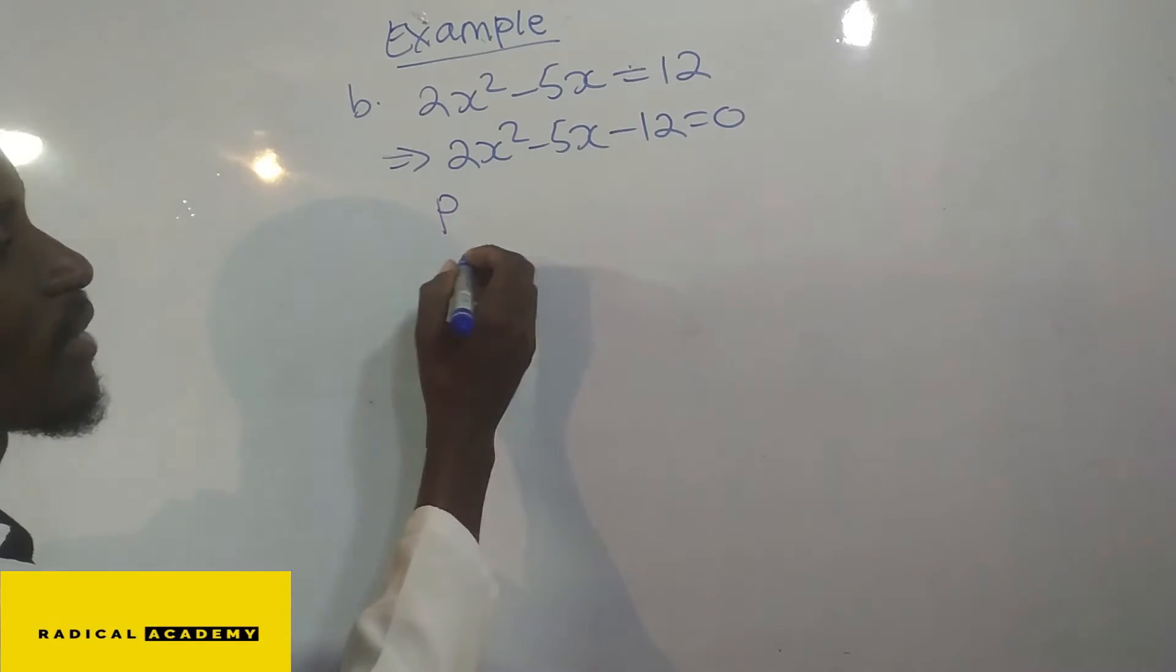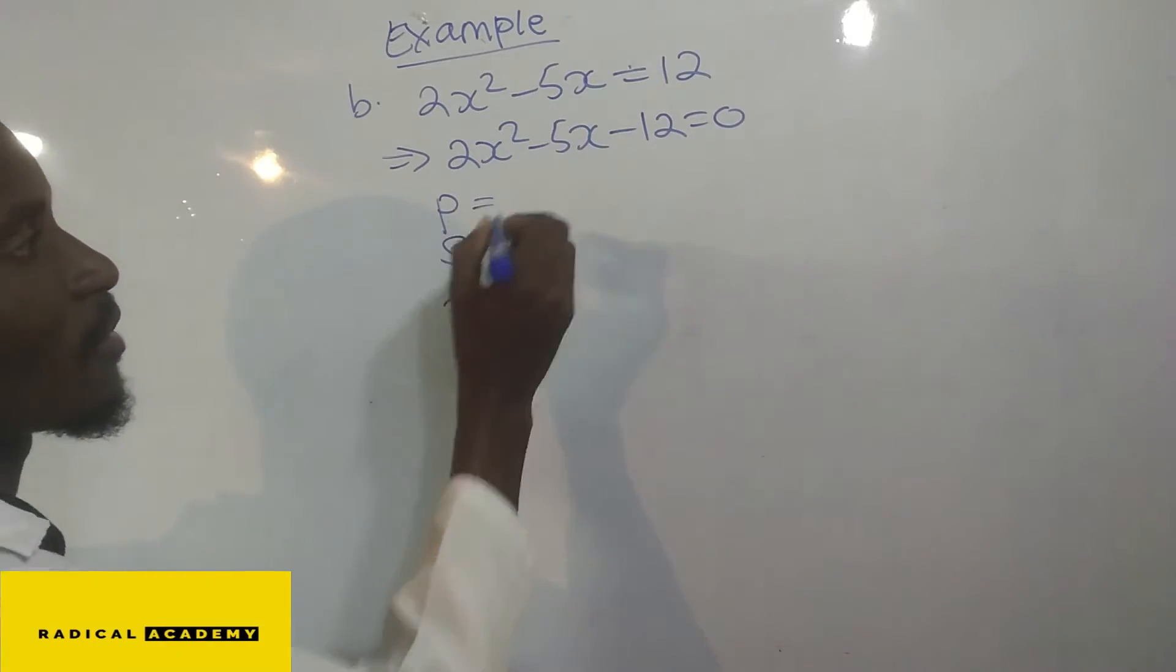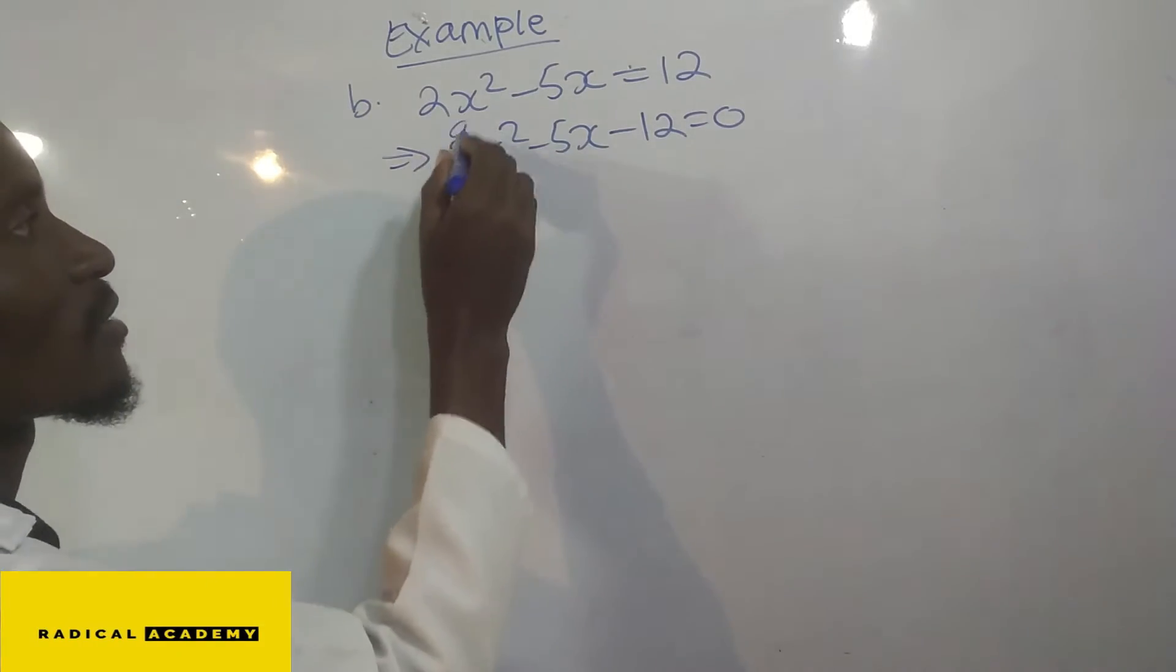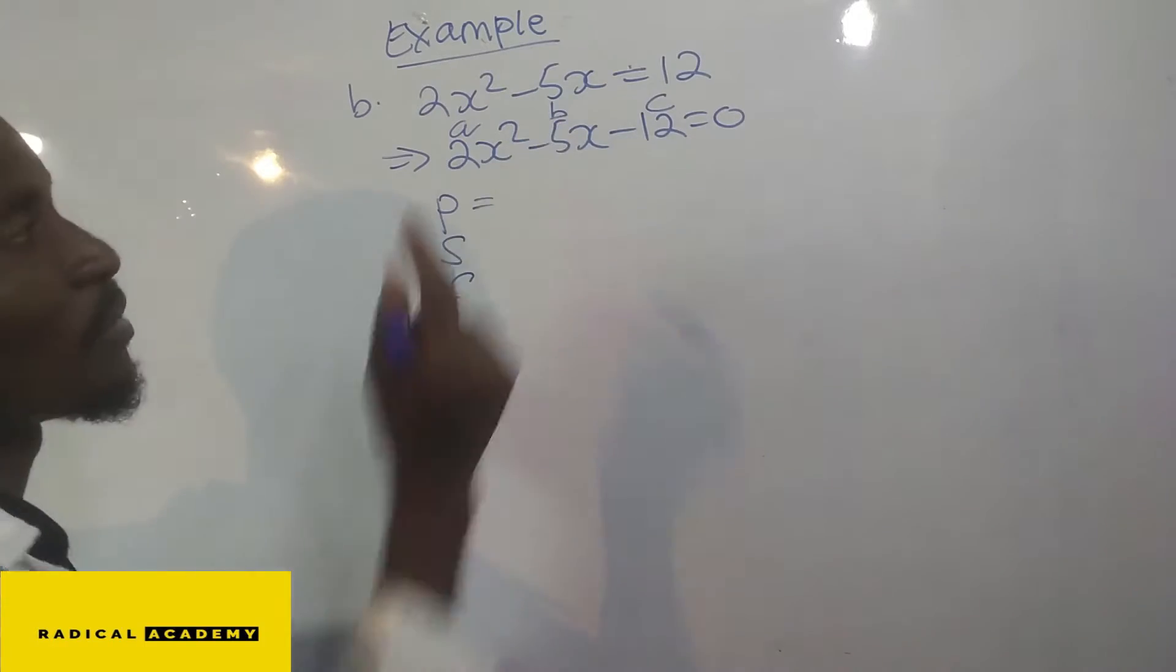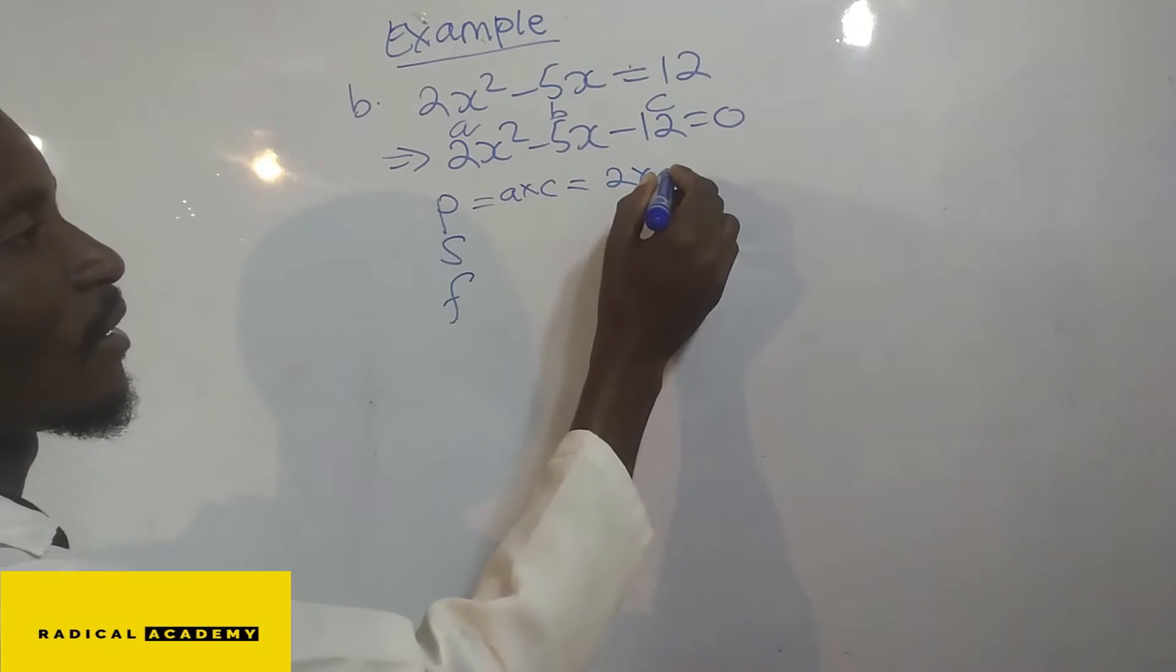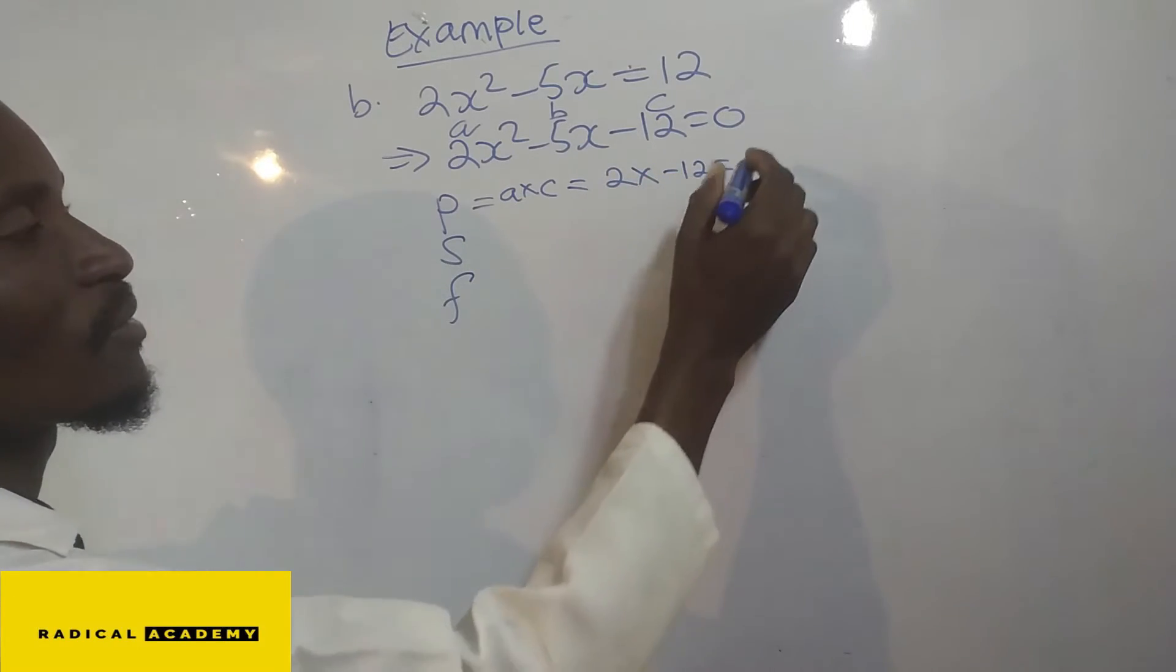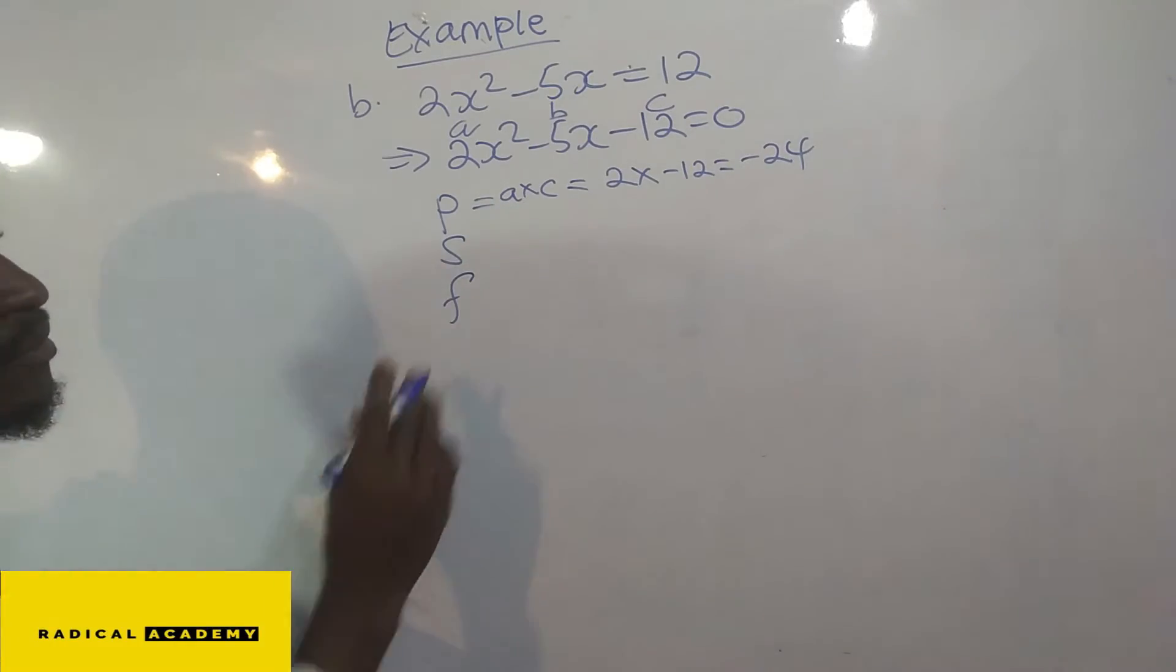So we need to find the product, the sum, and then the factors. The product is this A and C, and that is B. So A times C equals 2 times negative 12, you get negative 24.